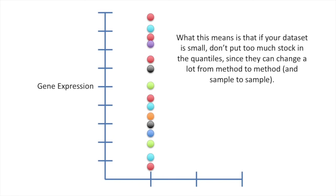What this means is that if your dataset is small, don't put too much stock in the quantiles, since they can change a lot from method to method and sample to sample. However, when your dataset is large, then all of the methods give fairly similar results.